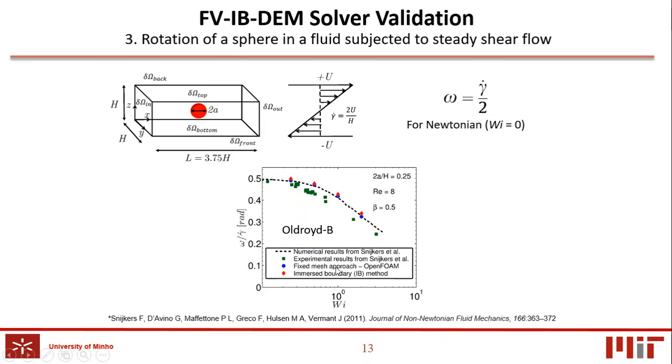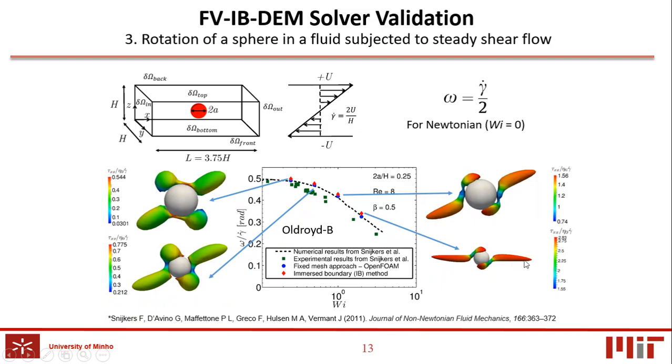Additionally, at low Weissenberg numbers, the particle rotation rate is similar to the theoretical estimate of Einstein for Newtonian fluids. And with the increase of elasticity, bigger structures in the wakes are formed, which act to retard the rotation rate.